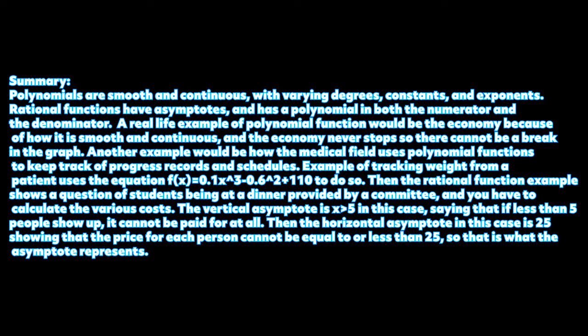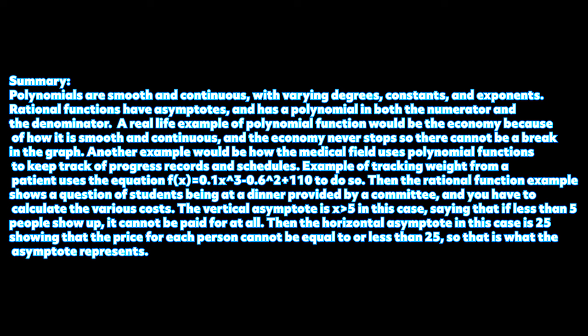Alright, so now for the summary. Polynomials are smooth and continuous with varying degrees, constants, and exponents. Rational functions have asymptotes and have a polynomial in both the numerator and the denominator.